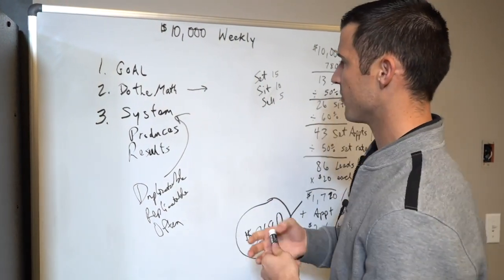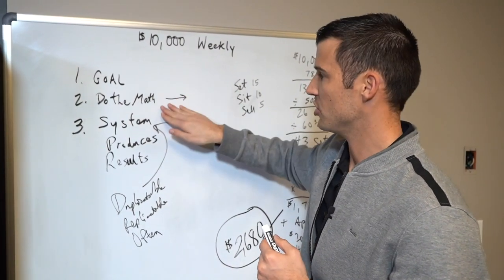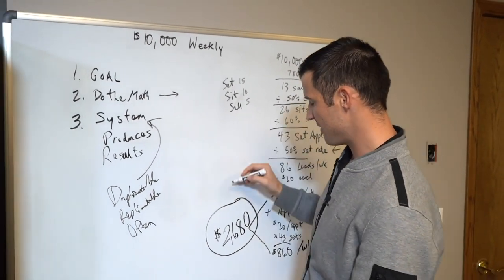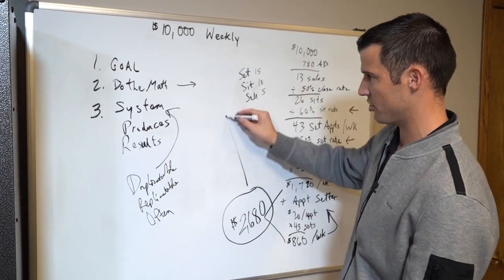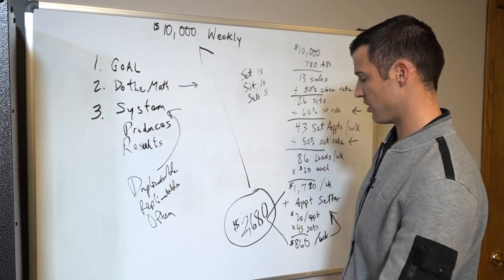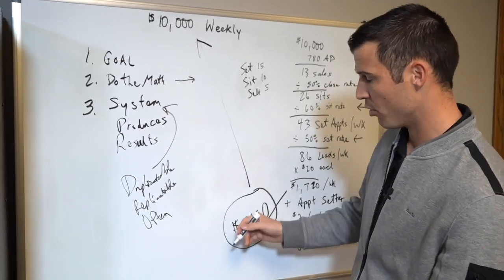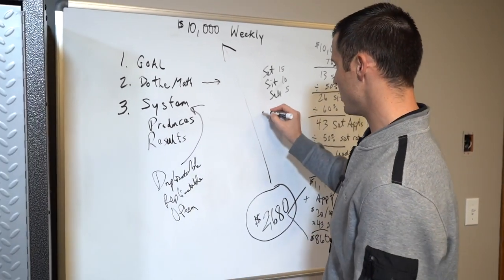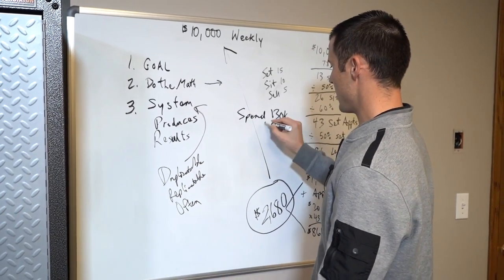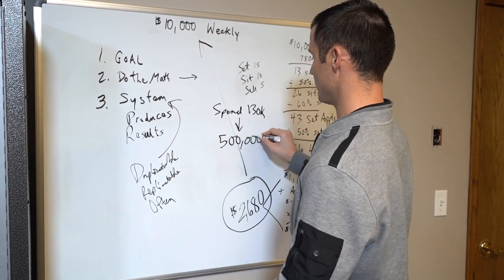Now, what's your goal? Maybe it's 10K, maybe it's not. You got to do the math. I've shared with you exactly how to do the math. Would you give someone $2,680 if they were going to give you $10,000 back? Do the math. You're spending about $130,000 and someone's giving you back $500,000. Would you do that math?